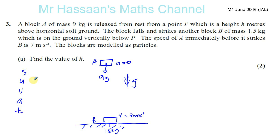S is H, that's what we're trying to find - the height that it's fallen. U is 0, V is 7, A is minus G, and T we don't know. So we can use V squared equals U squared plus 2AS.